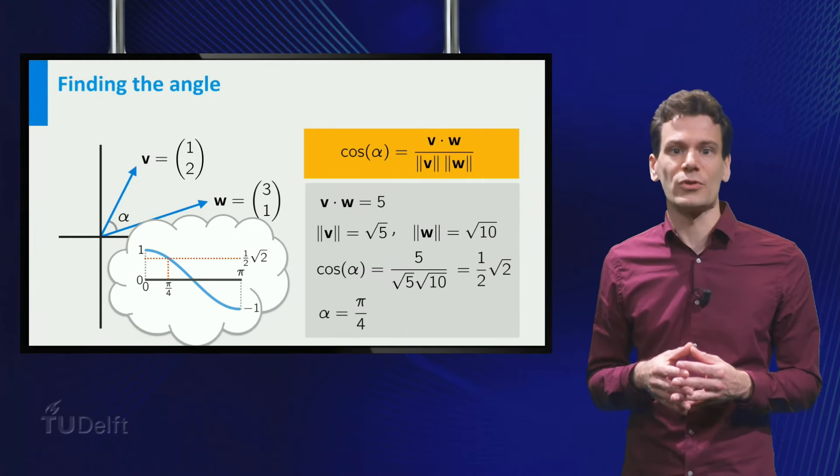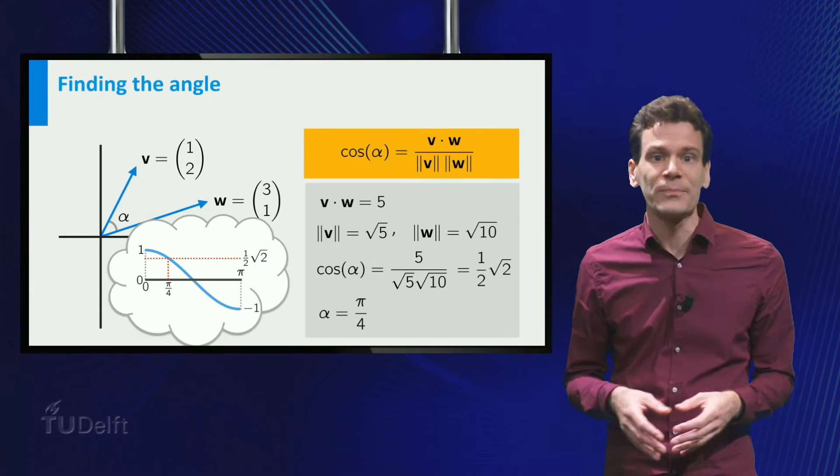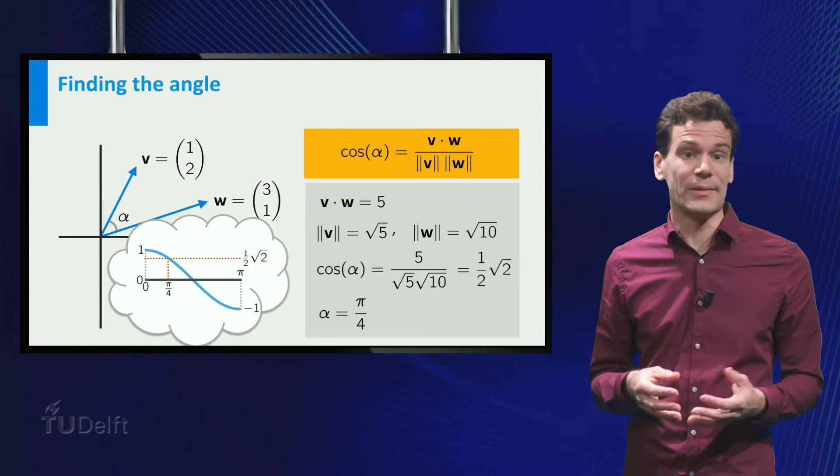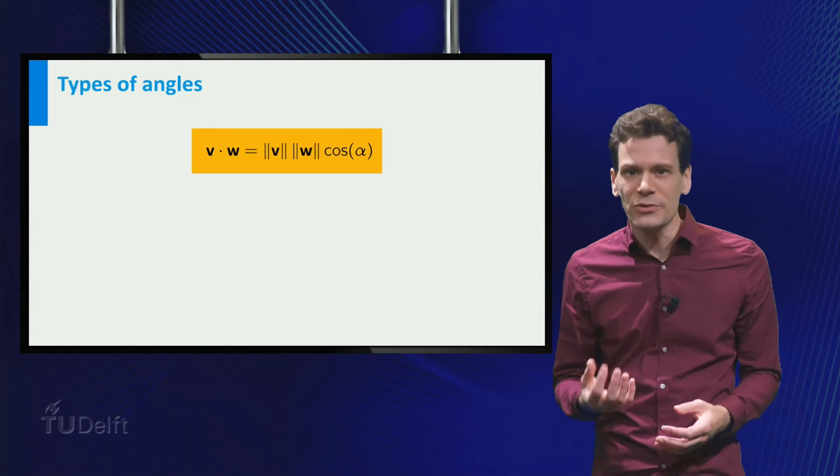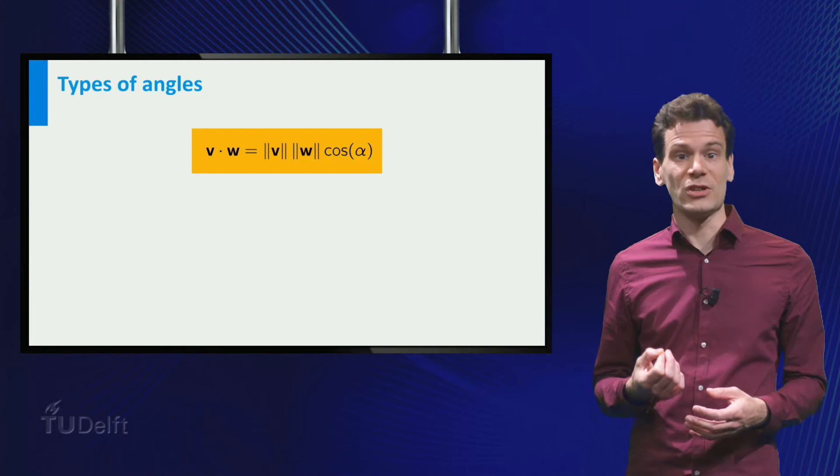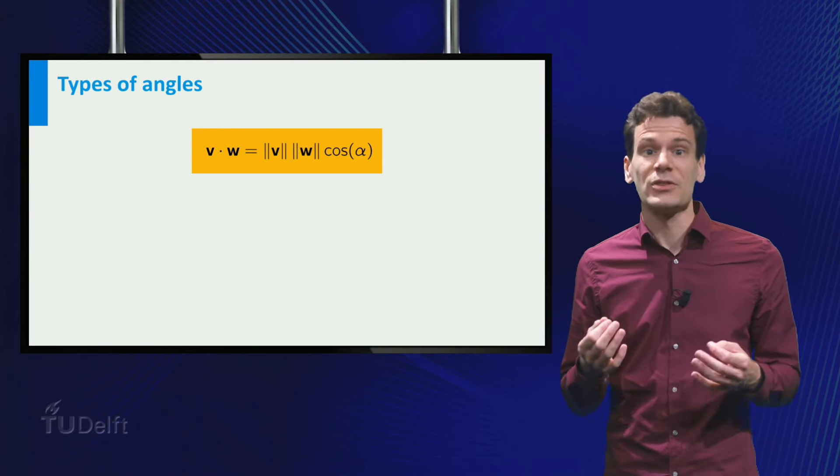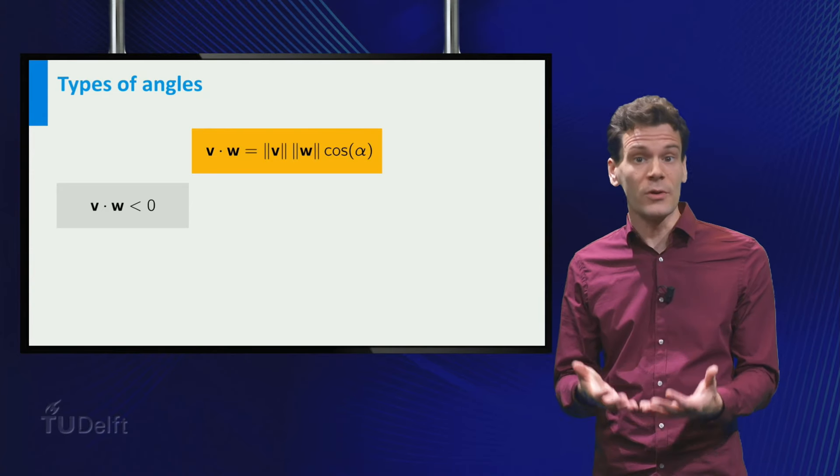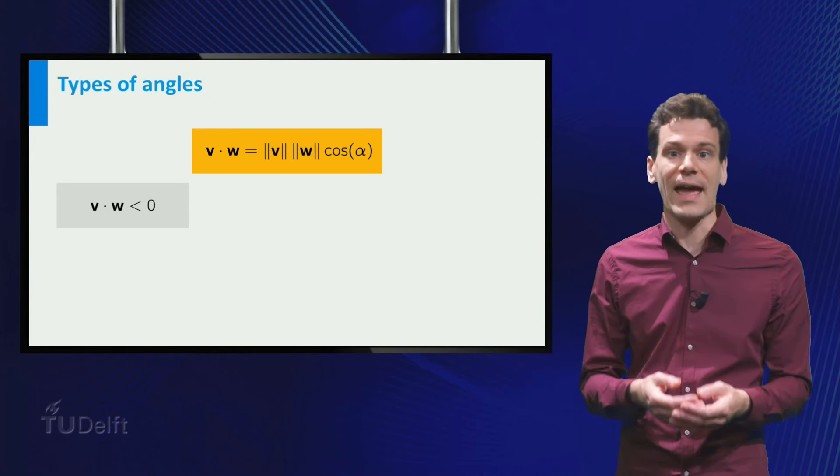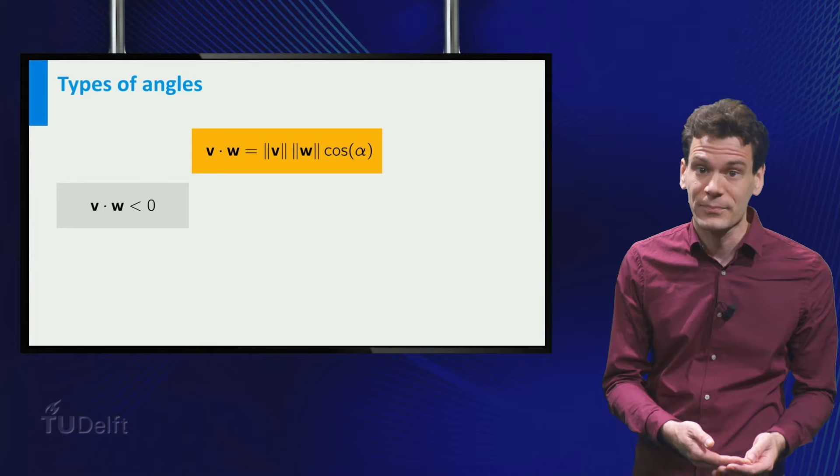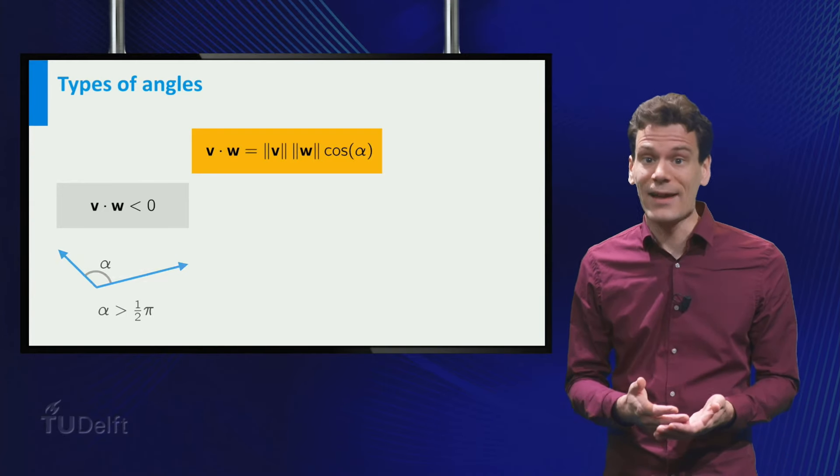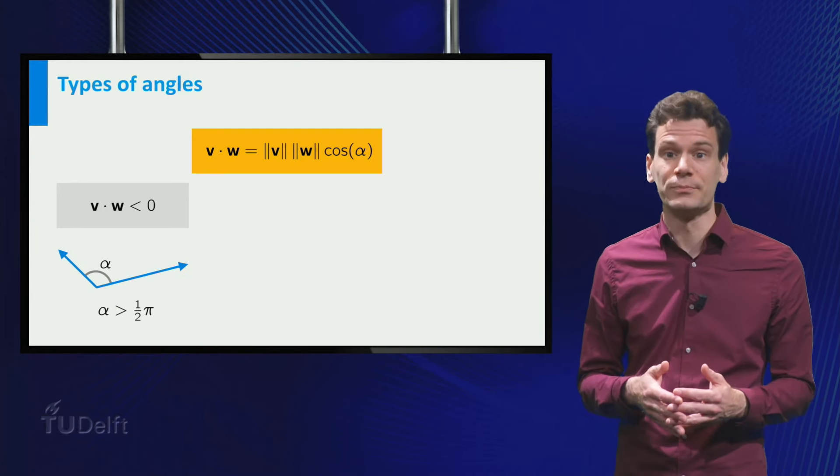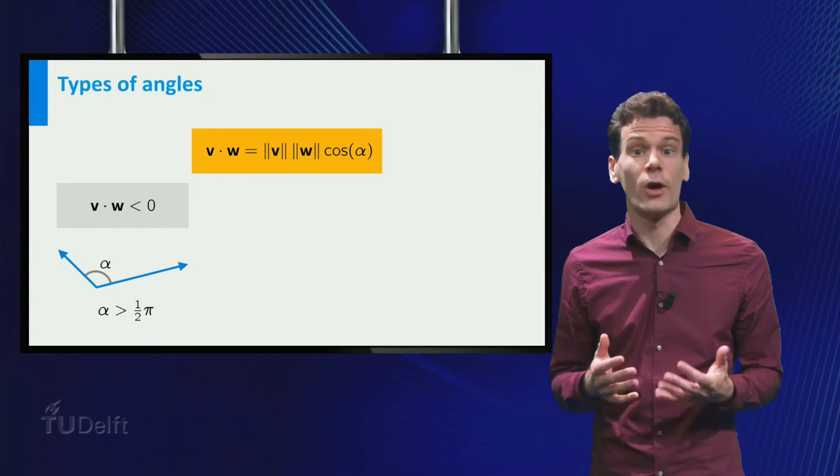You see that if you know the norms of two vectors and their dot product, then you can calculate the angle between them. But even on its own, the dot product provides information about the angle. Indeed, suppose the dot product is negative. The norms are larger than zero, so this means that the cosine of the angle must be negative. This means that the angle is larger than pi over 2. Such an angle is called obtuse.